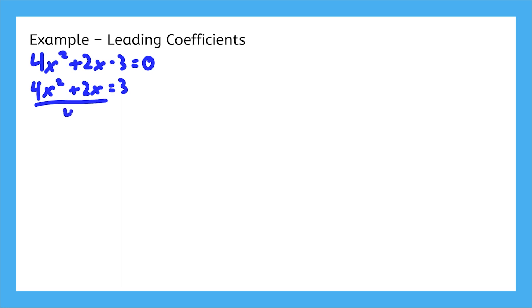Divide it off, of course. 4 divided by 4 is 1, 2 divided by 4 is 1 half, and 3 divided by 4 is 3 fourths. Now there's no longer a leading coefficient, and we can complete the square.